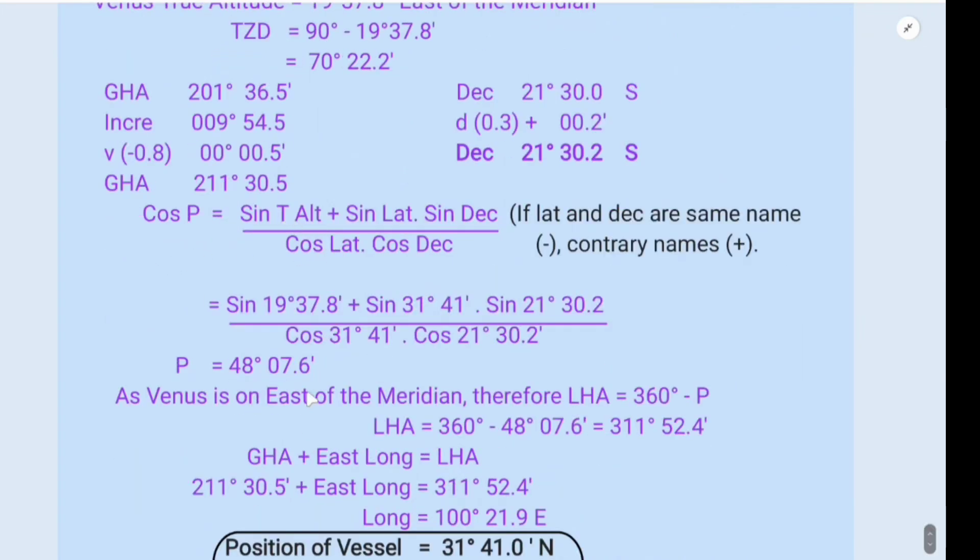Substitute the values of true altitude, then sine of latitude, and then sine of declination. And then you simplify this equation. Then we get the value of P, 48 degrees 07.6 minutes.